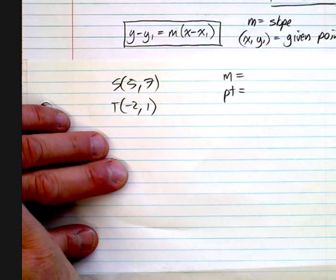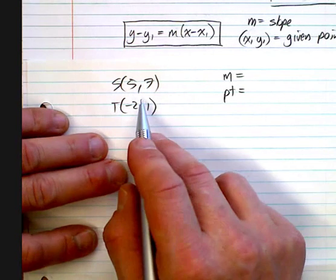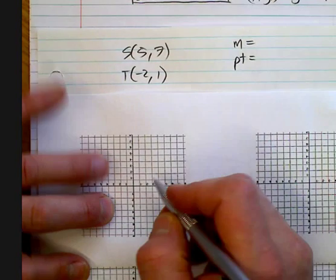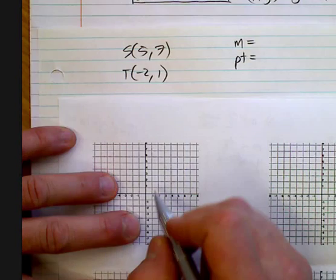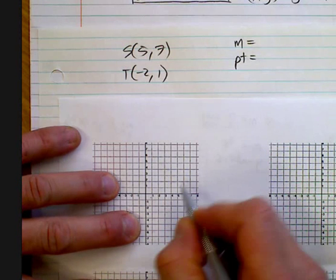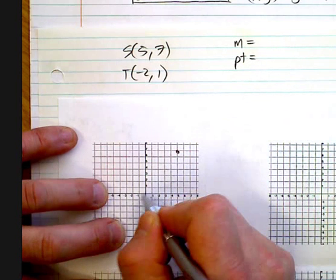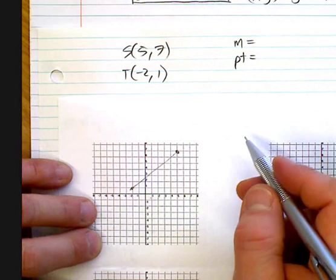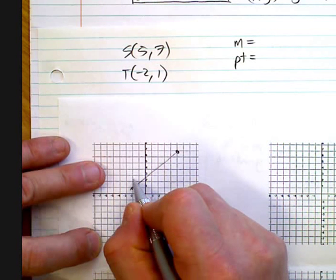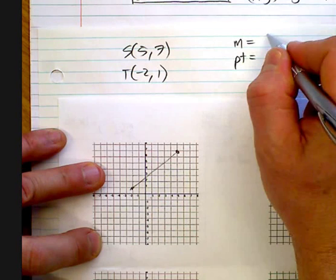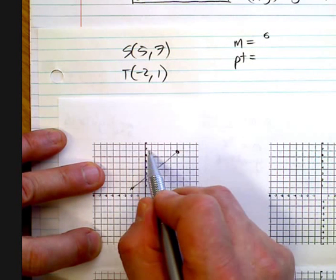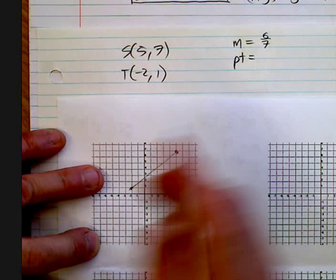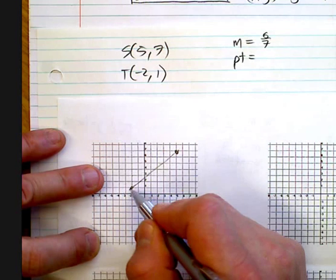Well, we've already got the point covered — I can use either of these points. If you wanted to graph it, no one's saying you can't. Plotting 5 and 7, and then negative 2 and 1. If you wanted to find the slope, you could find it pretty easily off the graph — it's 6 over 7. So 6 sevenths is my slope.